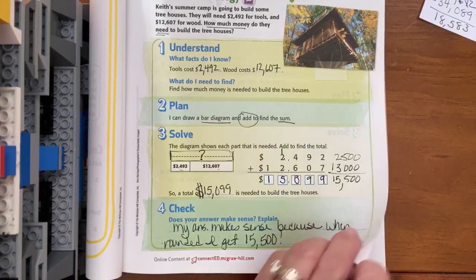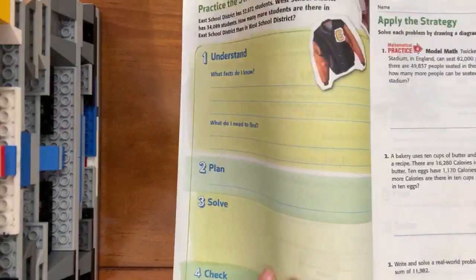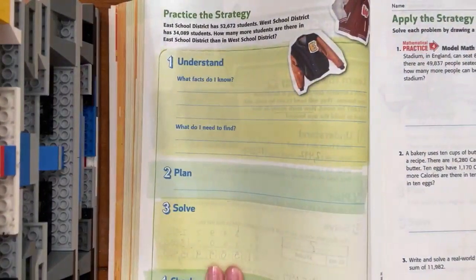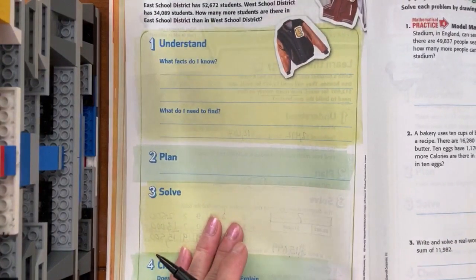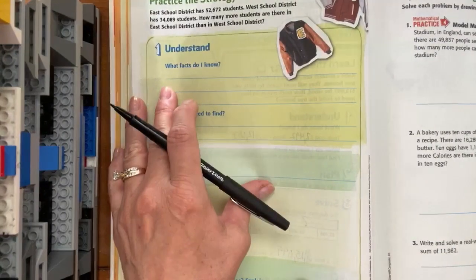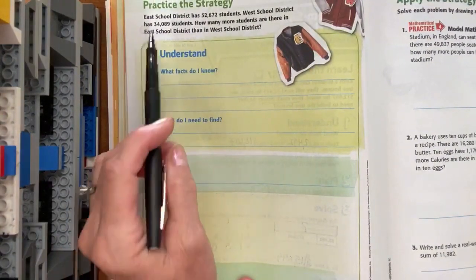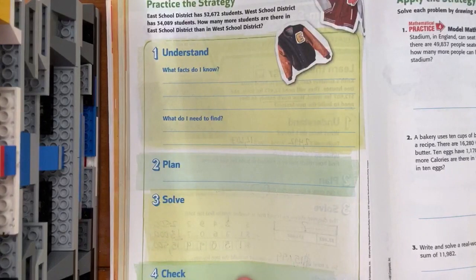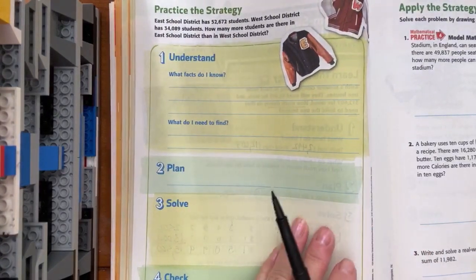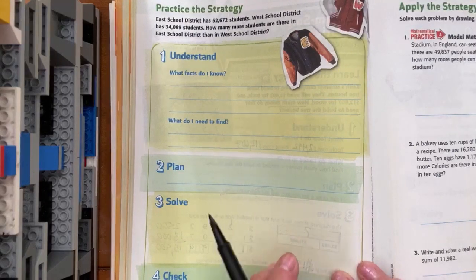Let's look at the next problem. Here we go, let's start with number one. What facts do we know? Let's read our story. East School District has 52,672 students. West School District has 34,089. How many more are there in East School District than West School District?